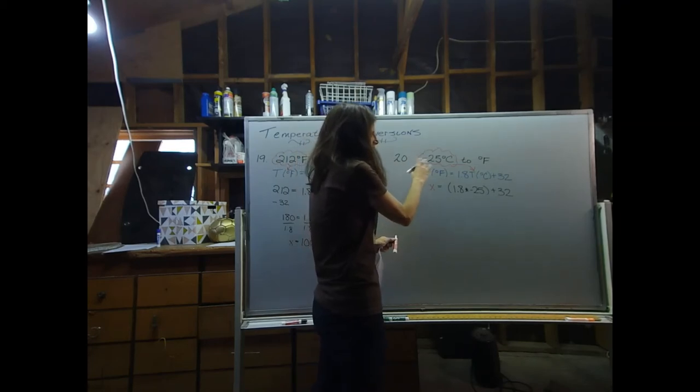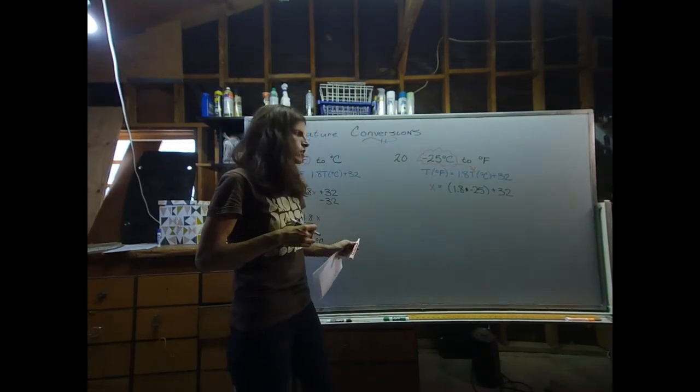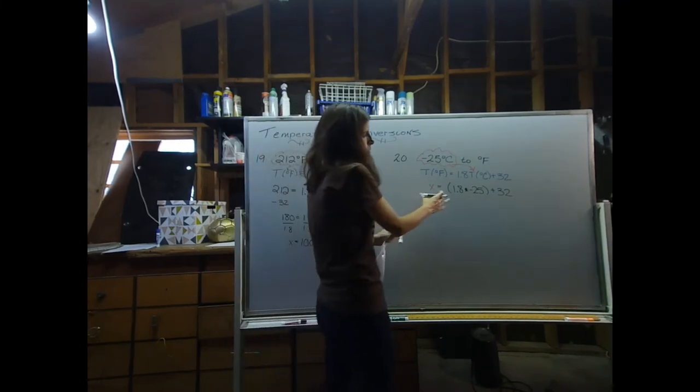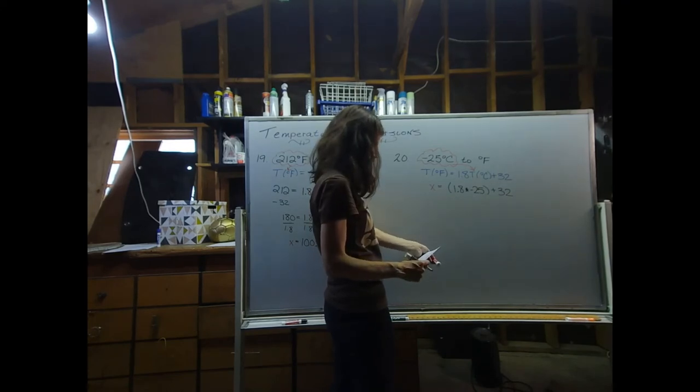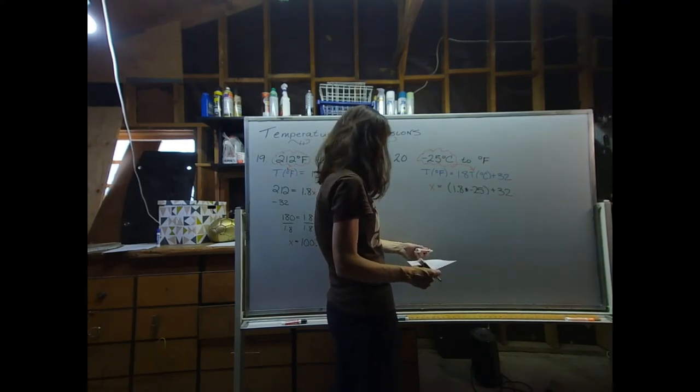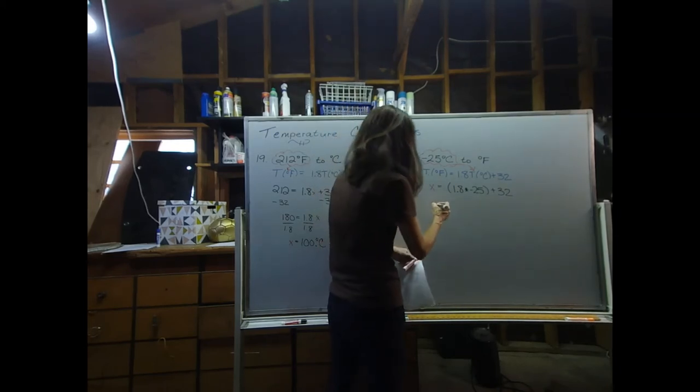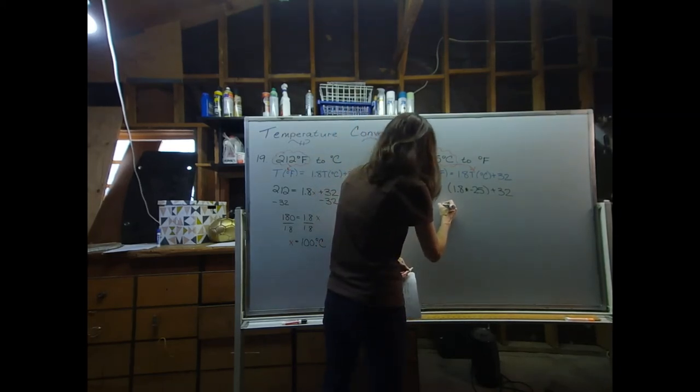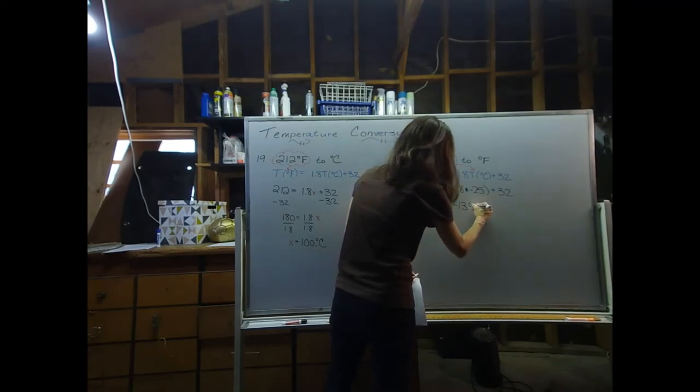I already plugged in the negative 25 on the right hand side for the degrees Celsius. So in my calculator, I'm going to do 1.8 times negative 25 plus 32. When I did that earlier, I got negative 13 degrees Fahrenheit. So x is equal to negative 13 degrees Fahrenheit.